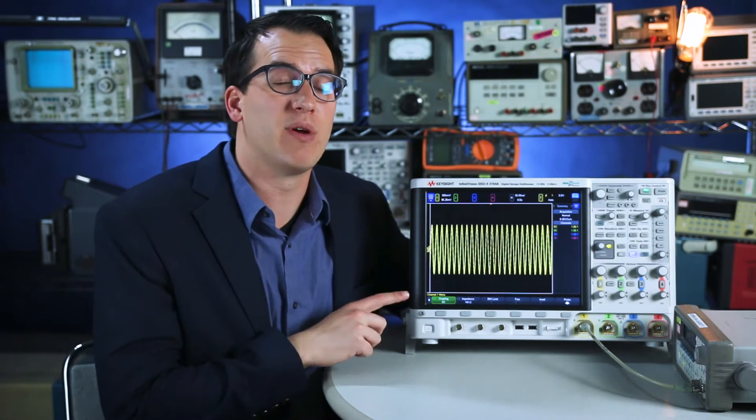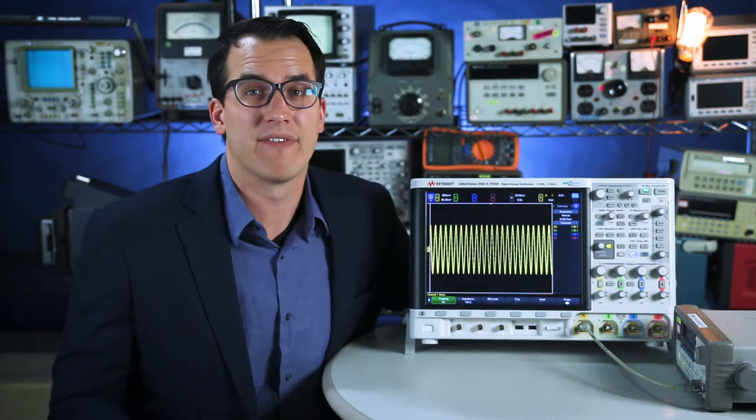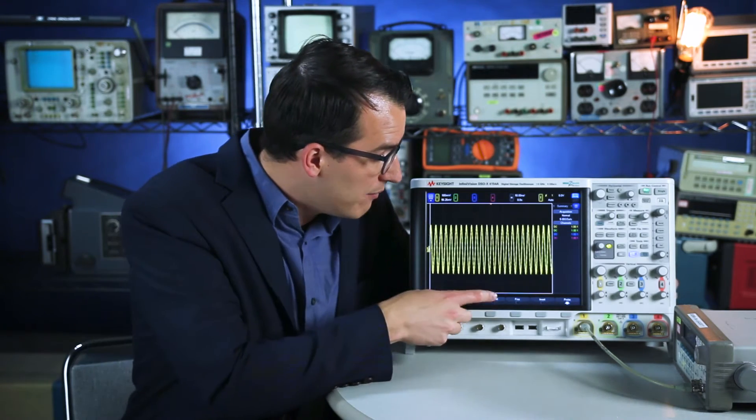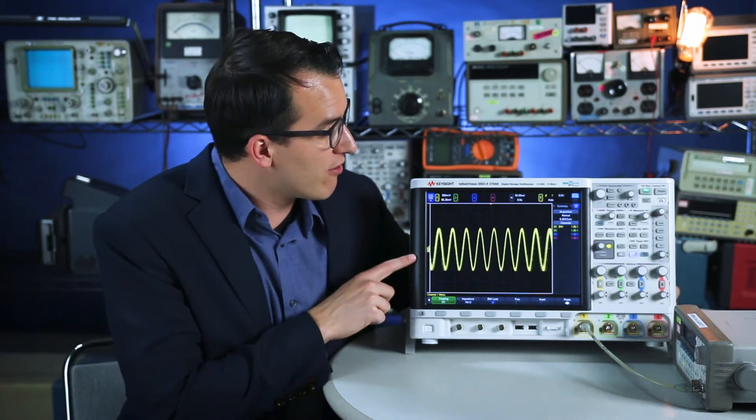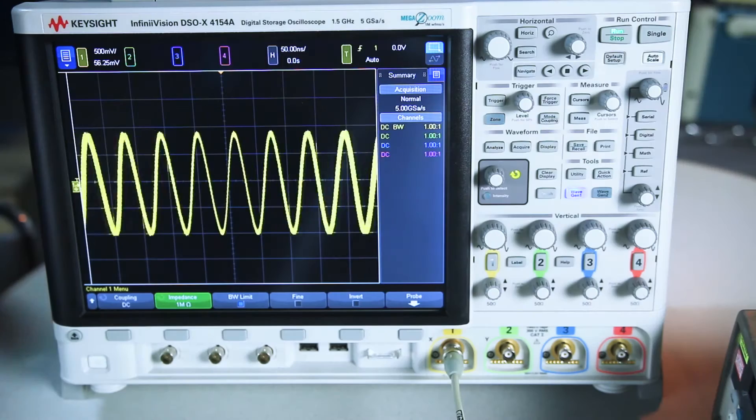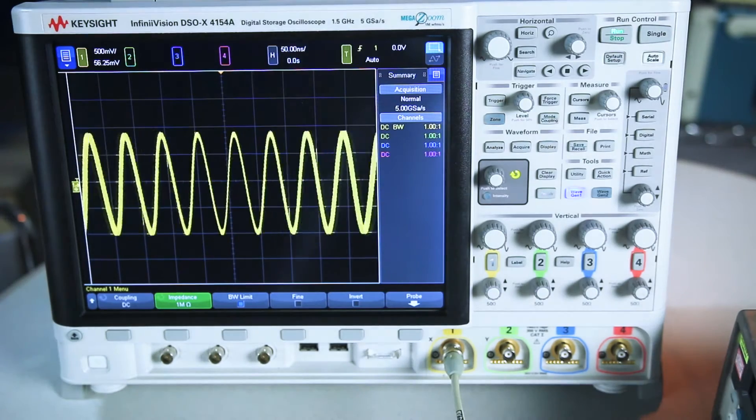I have on screen a signal sweeping from 20Hz to 60MHz and clearly with my 1.5GHz oscilloscope I'm having no trouble seeing that signal. But let's turn on a 20MHz bandwidth limit. So I'm going to now emulate a 20MHz scope. This is what that signal would look like if I had a 20MHz scope. Notice how it gets smaller and smaller the higher the frequency goes.